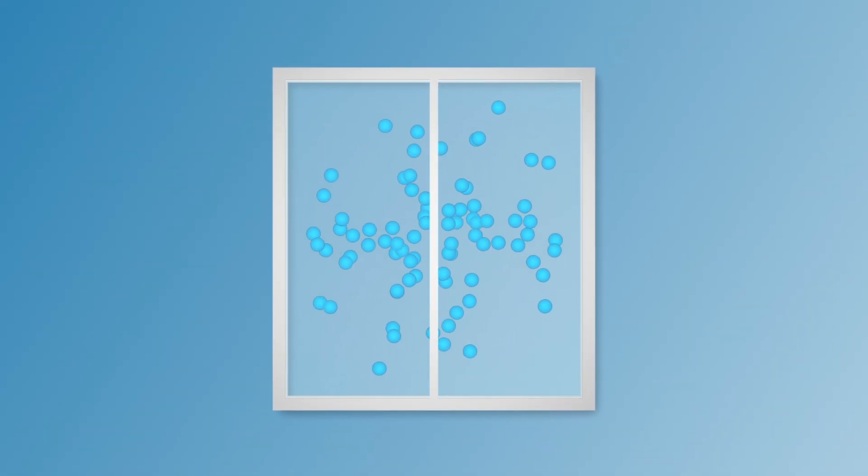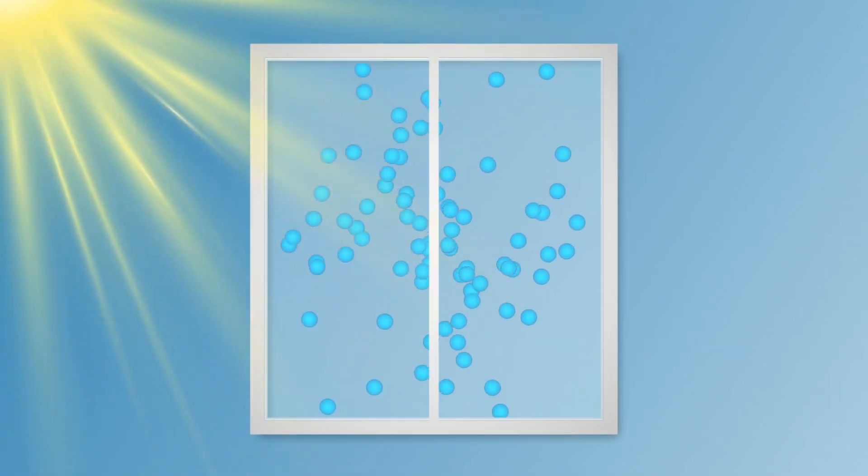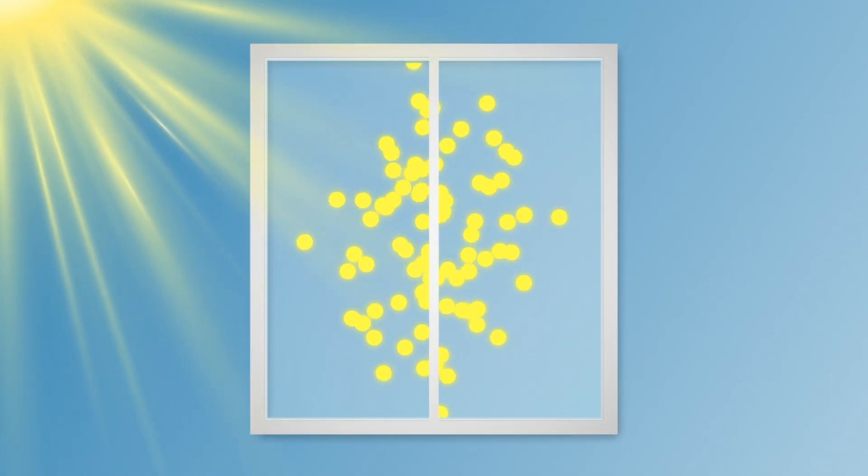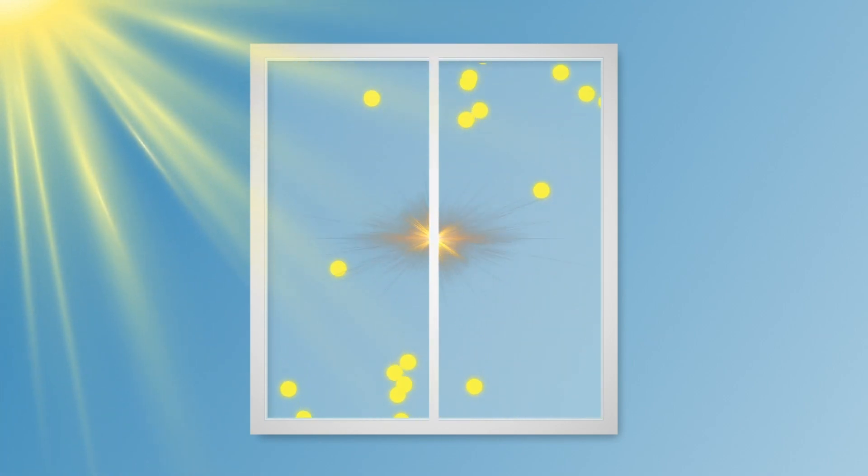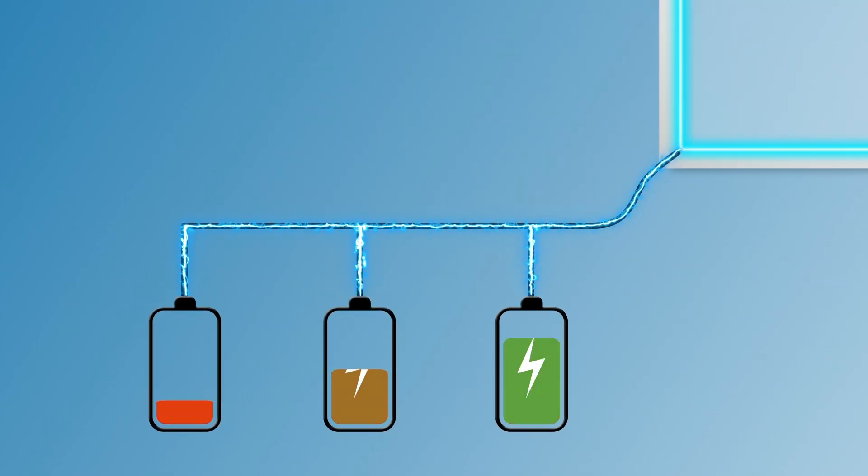Energy glass windows are manufactured with proprietary nanoparticles embedded in the glass. When sunlight hits these nanoparticles, they redirect light outward to our patented edge collectors embedded in the window frame, creating DC current, running it down the frame through a copper wire to its destination.